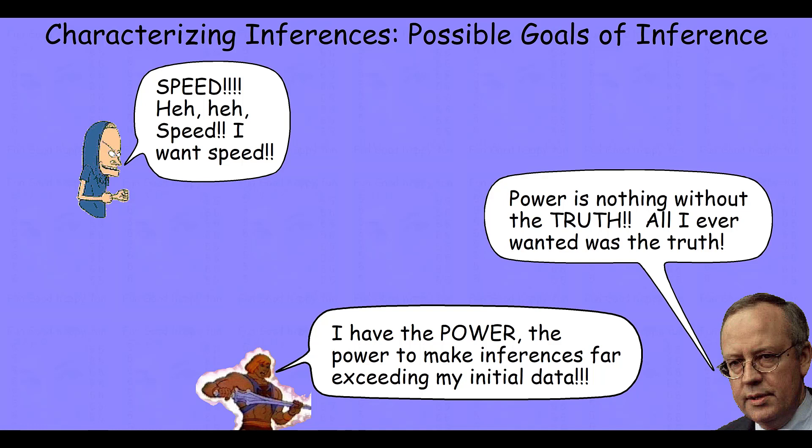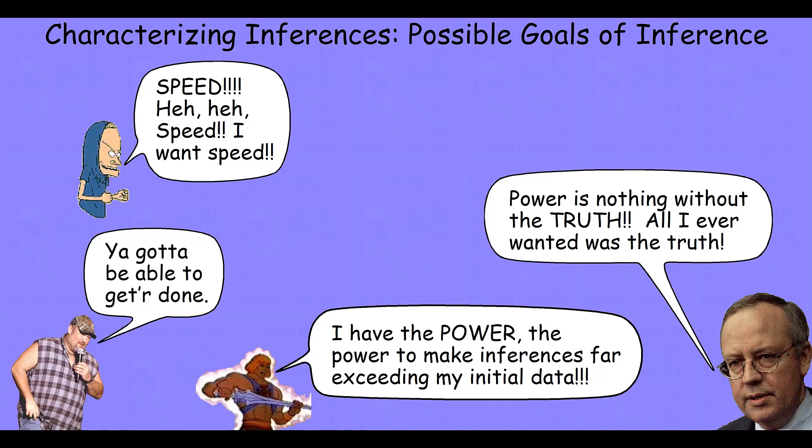Now, in a complex and highly variable world, these three features are very rarely even close to being optimized. In fact, probably the visual system is the closest thing human beings have to a powerful, fast inference system that tends to produce true beliefs. But of course, there's the whole chronicle of visual illusions to illustrate that it, too, isn't perfect. So what happens in a complex and variable world is that trade-offs are made because, as Larry the Cable Guy says, you got to get it done.